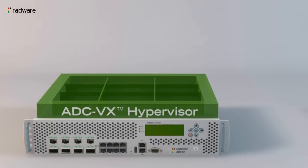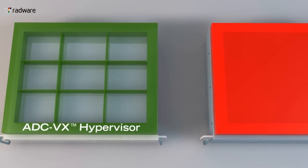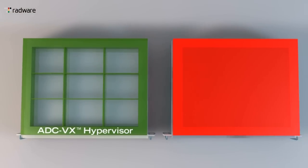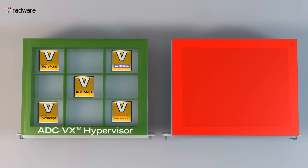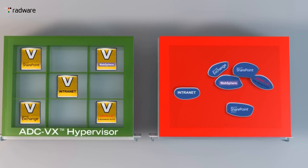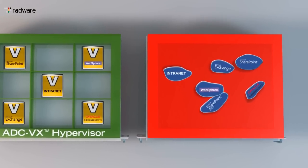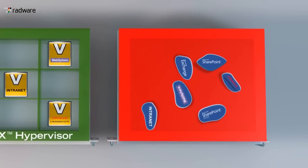Let's compare a shared ADC model to the ADC-VX model. With ADC-VX, each application receives its own VADC with a completely private environment, unlike in the shared ADC, where all applications run on the same device without separation.